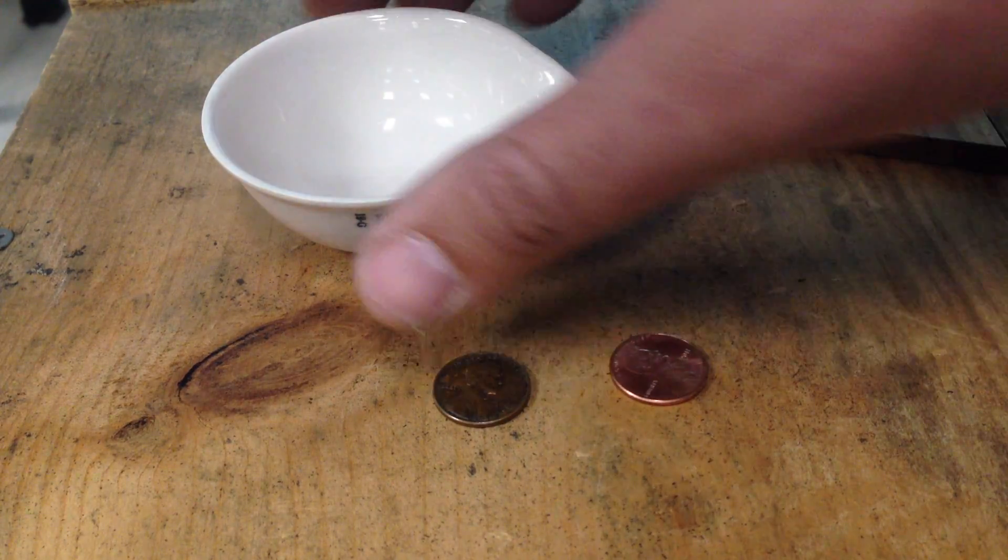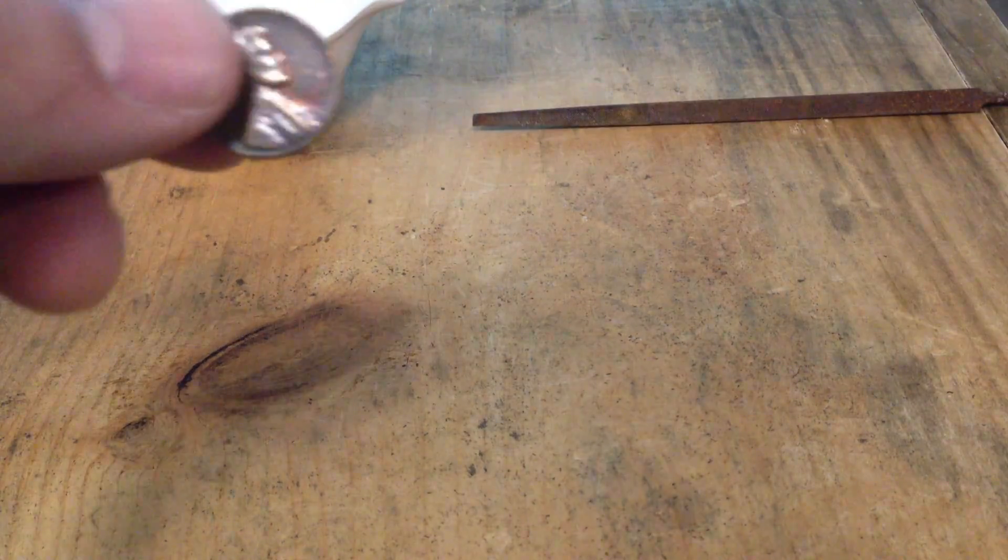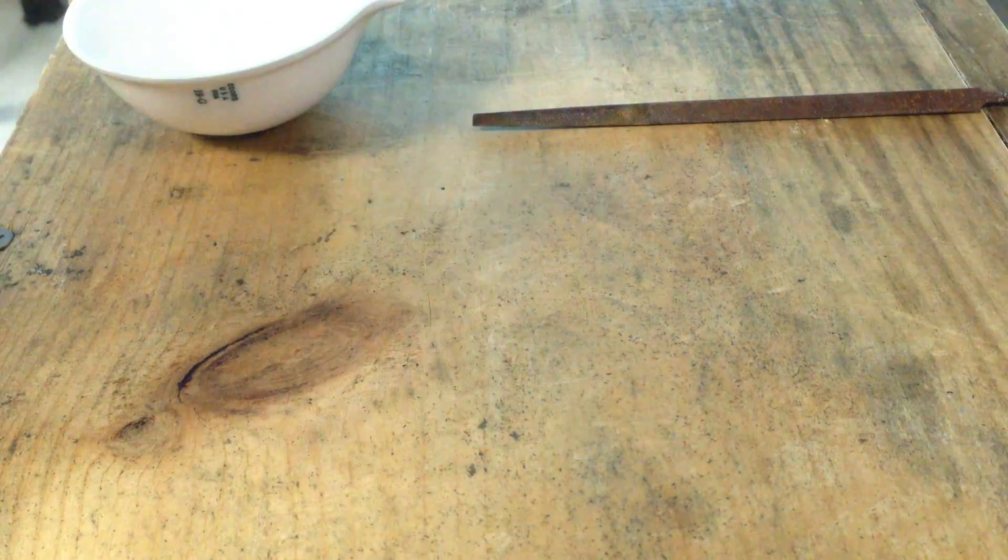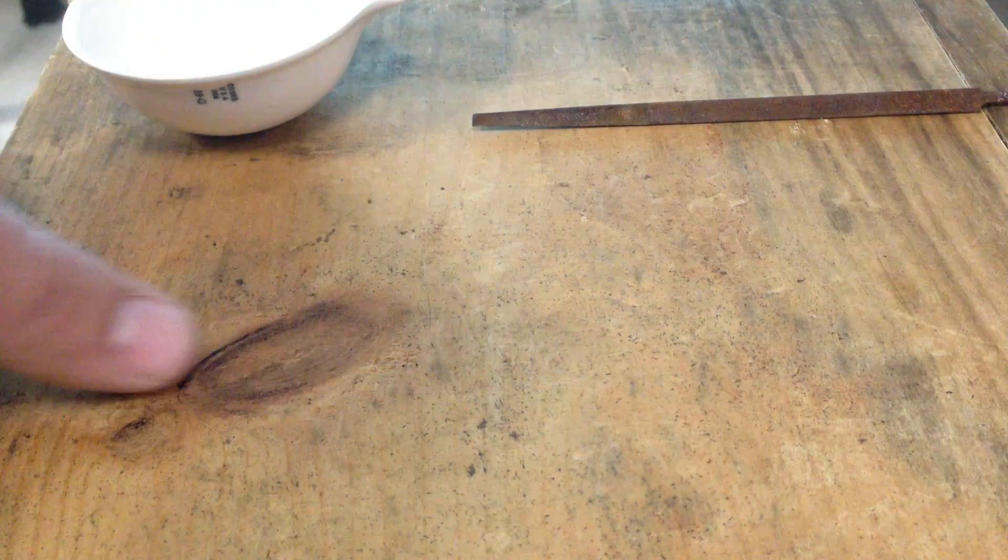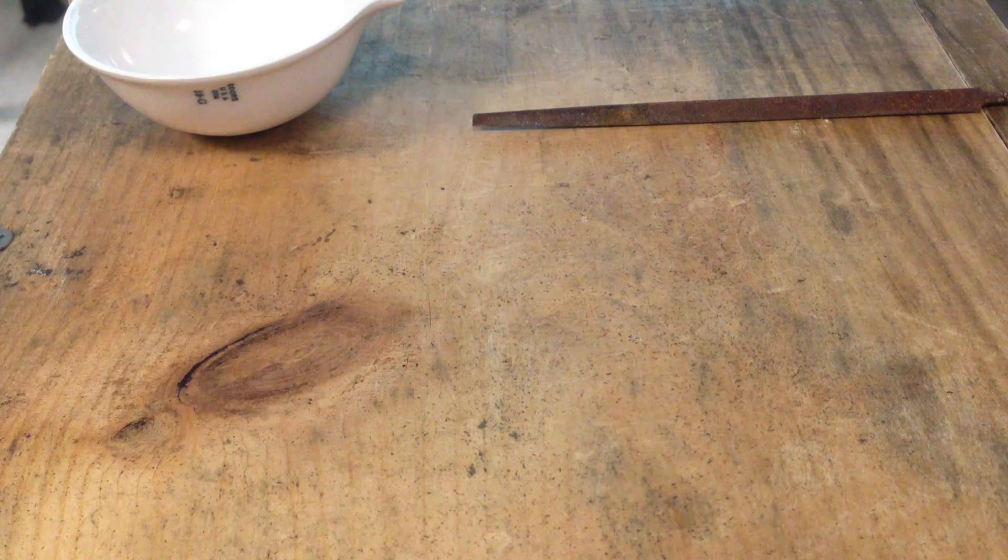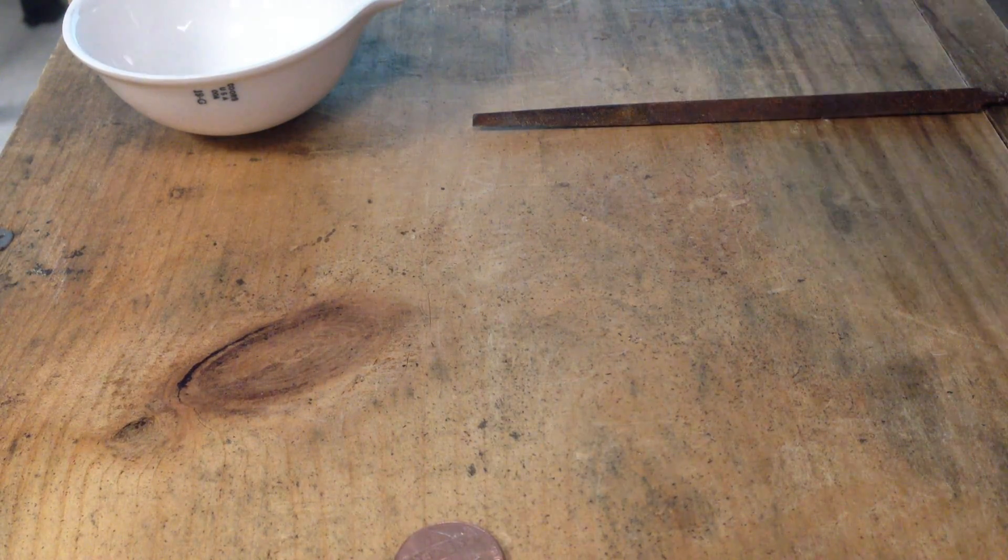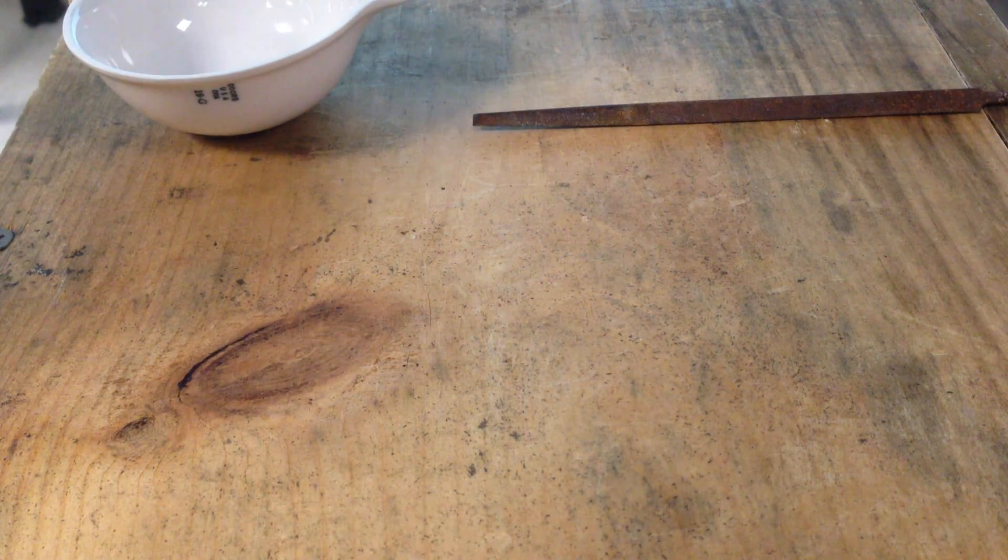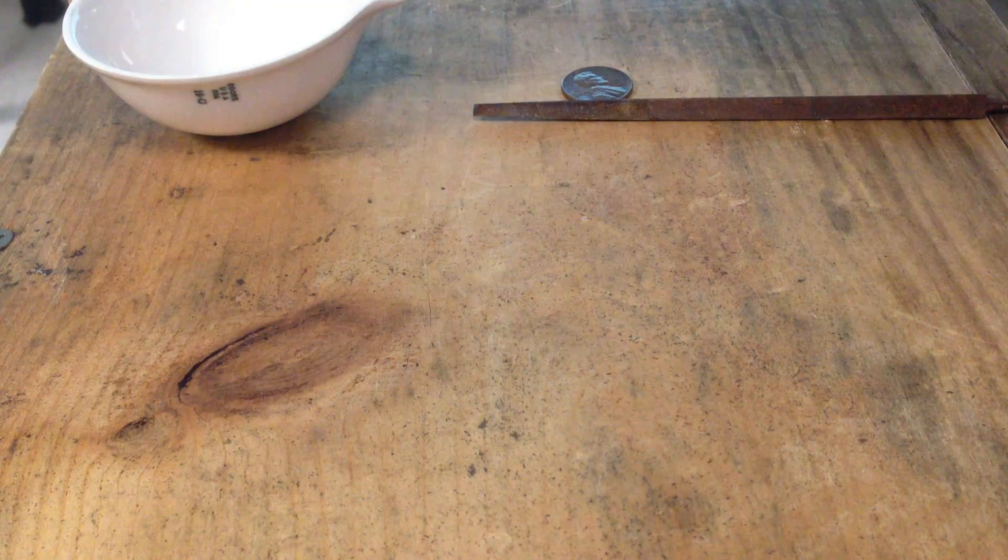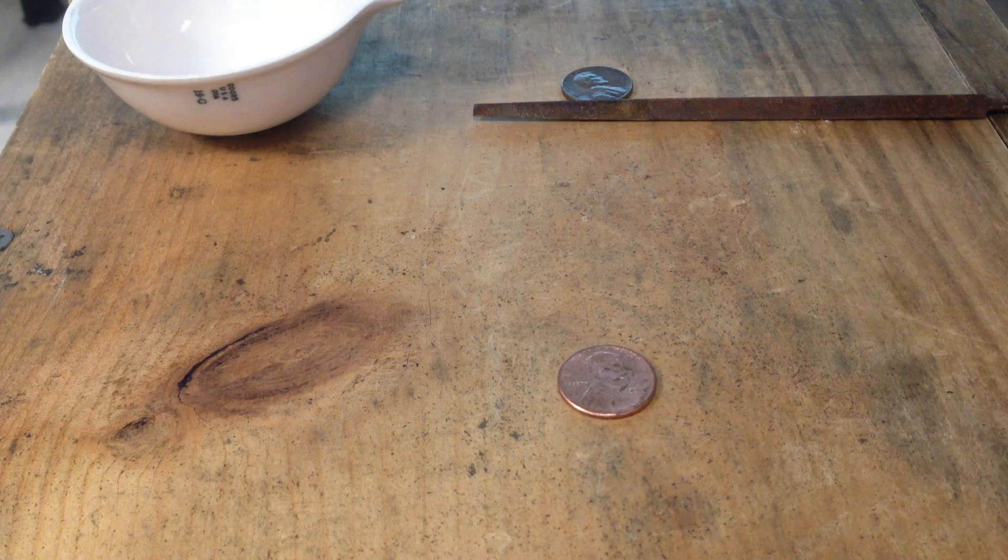And you can hear the difference of the densities if I drop them. So here comes the sound of the pure copper penny. Let's listen. [drops] Okay, now listen to the new penny that's 95% zinc. [drops] Do that one more time. Here's the more dense penny, the old penny. [drops] Here's the new penny. [drops] All right, maybe you can hear that.